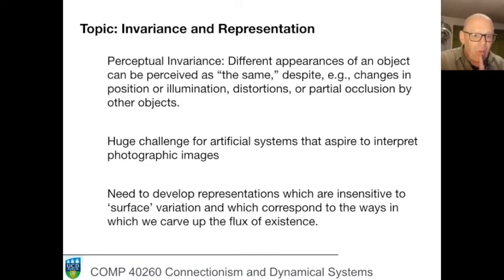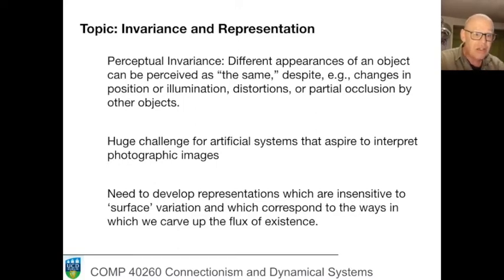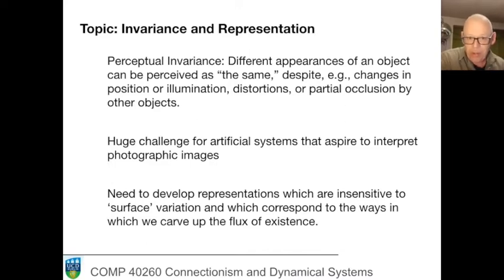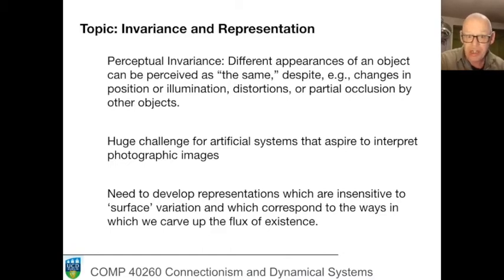When we shift and go to artificial systems whose guiding metaphor for perception is the interpretation of photographic images, this actually becomes a huge challenge. In this framework, it's necessary for a network, if it's going to recognize an element in an image, to learn to ignore the manifest changes that go with changing lighting, position, orientation, and scale.